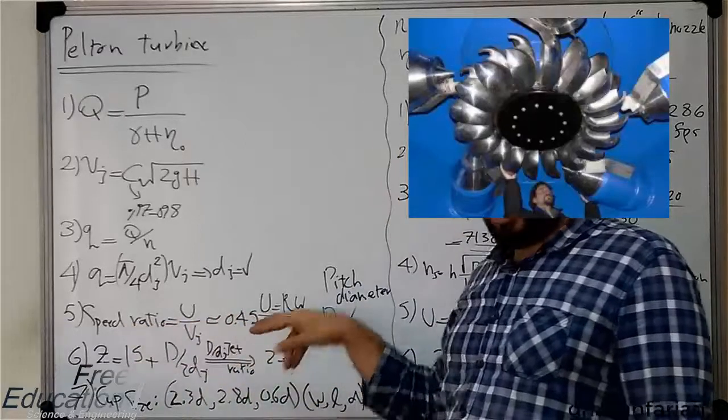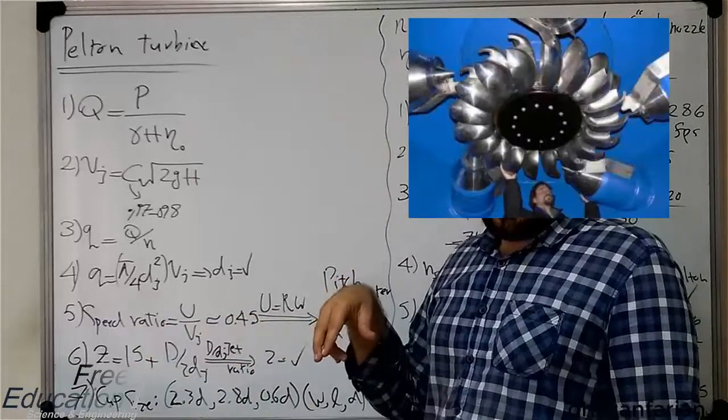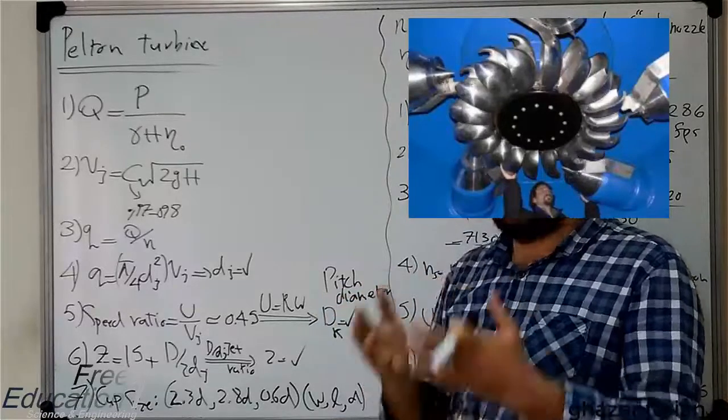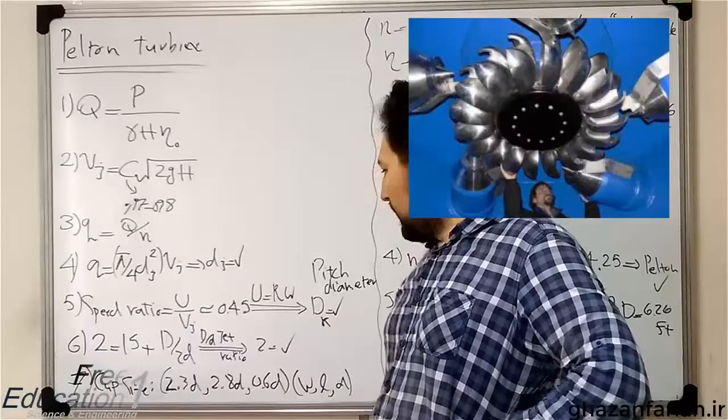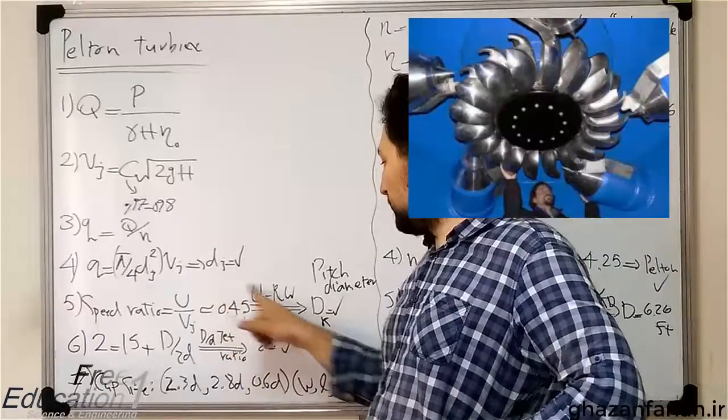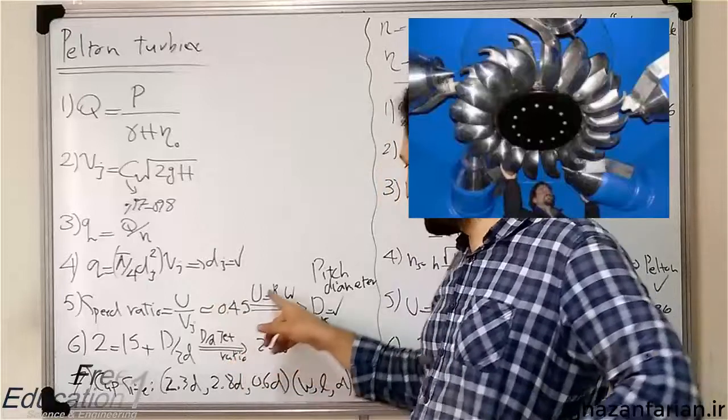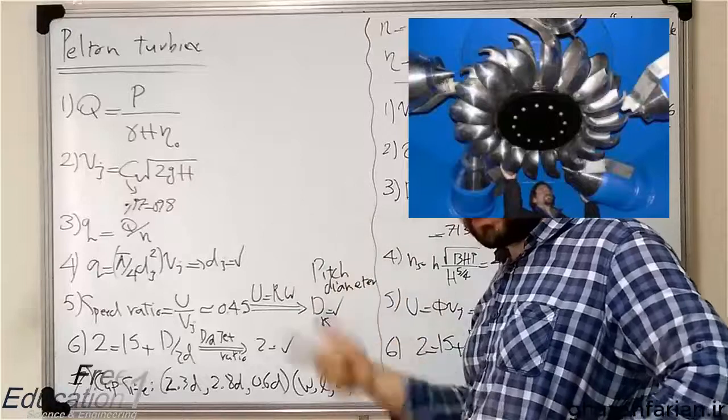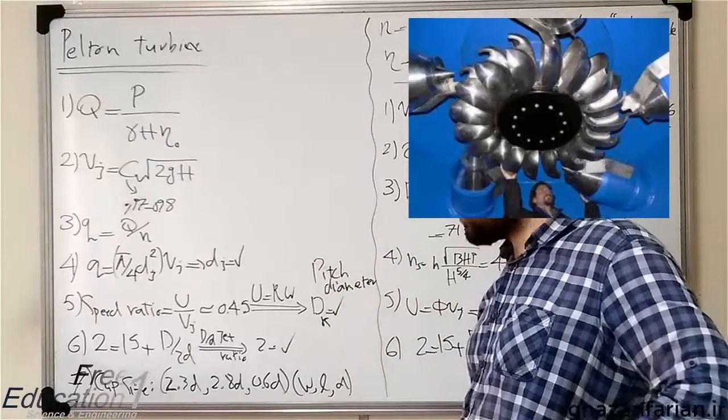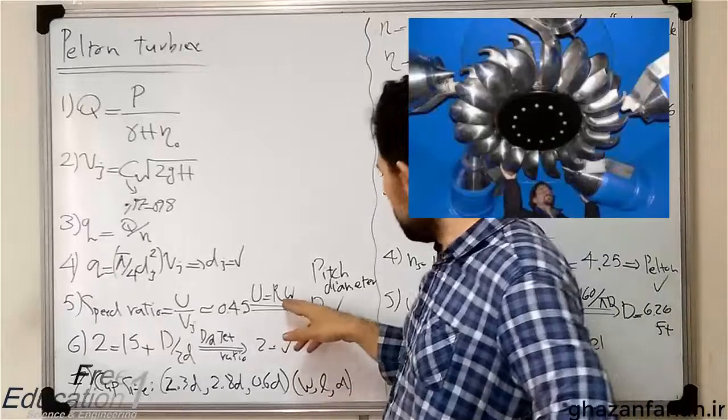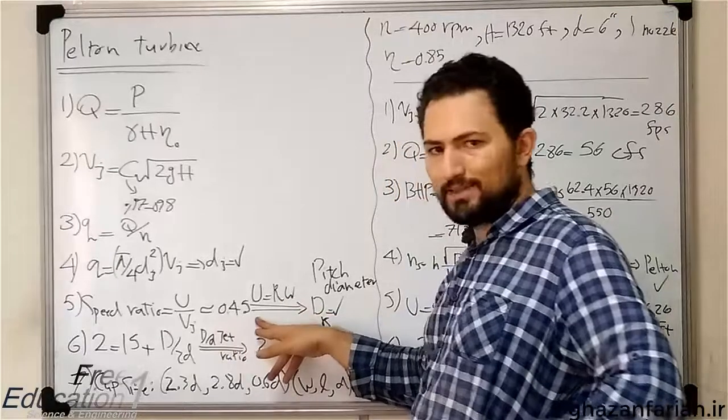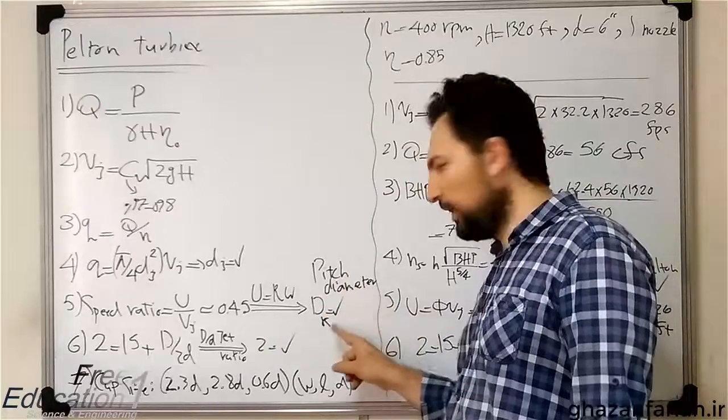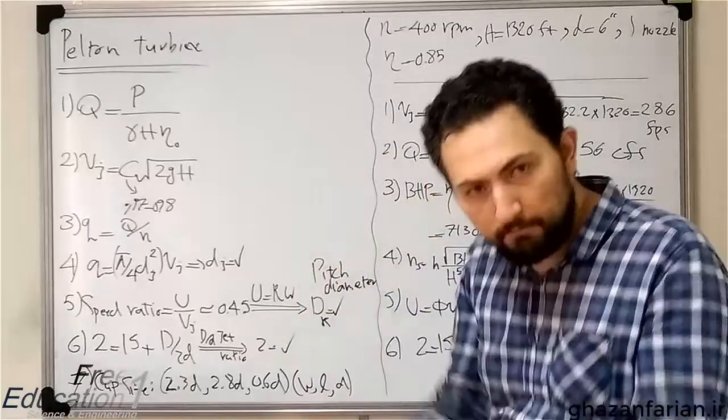So, selecting this speed ratio is similar to the result in the previous session based on the control volume analysis. And this way, using the relation U equals R omega, R is the radius of the runner and omega is the angular velocity of the runner. So, using this constant as an engineering advice, you can easily compute the pitch diameter or the runner diameter or the diameter of the wheel.